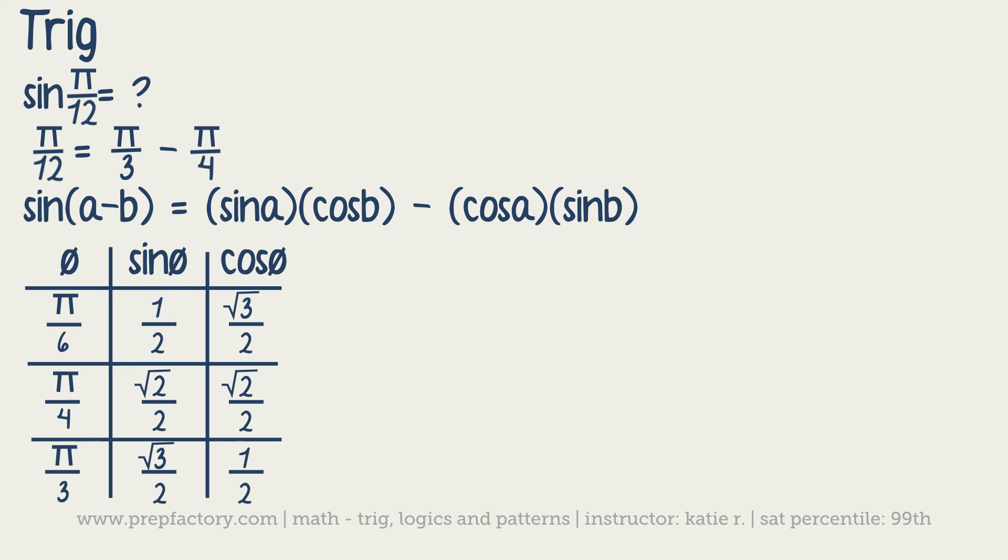We know that sine of pi over 12 is the same as sine of A minus B. So we're going to just plug in to the second part. We know that A is pi over 3 and B is pi over 4. All we're doing is just sticking in pi over 3 and pi over 4 into our equation. The first thing is sine of pi over 3. We would look over here and say sine of pi over 3 is radical 3 over 2. So that's our first part.